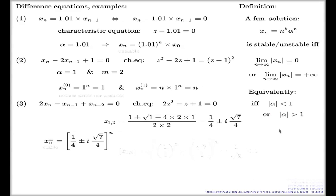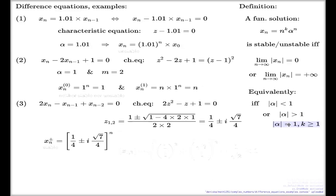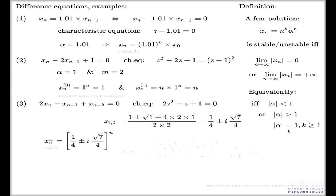Actually, I haven't put this on the slide, but if the absolute value of alpha is one and k ≥ 1, that's another case for the solution to be unstable — in the case of a fundamental solution. If the solution is a general solution — a combination of fundamental solutions — then you have to do the analysis on the spot, but effectively, if an unstable solution is present in your combination, then probably the whole solution will be unstable.